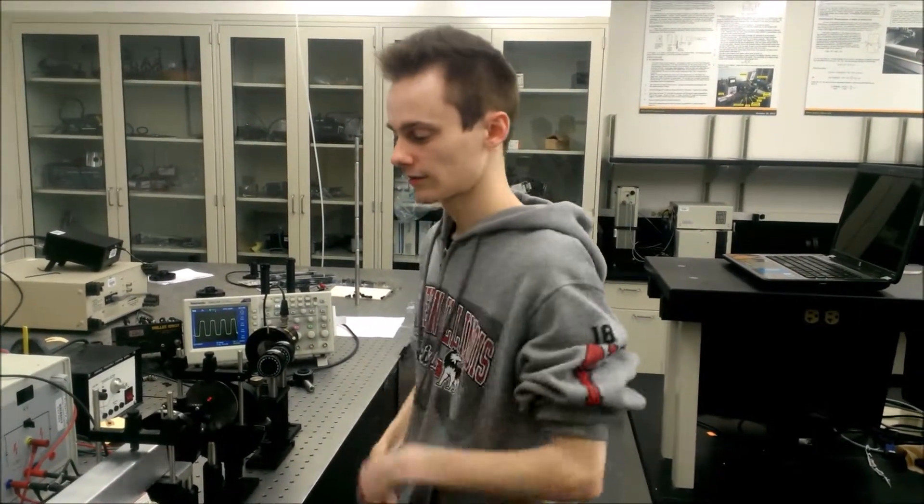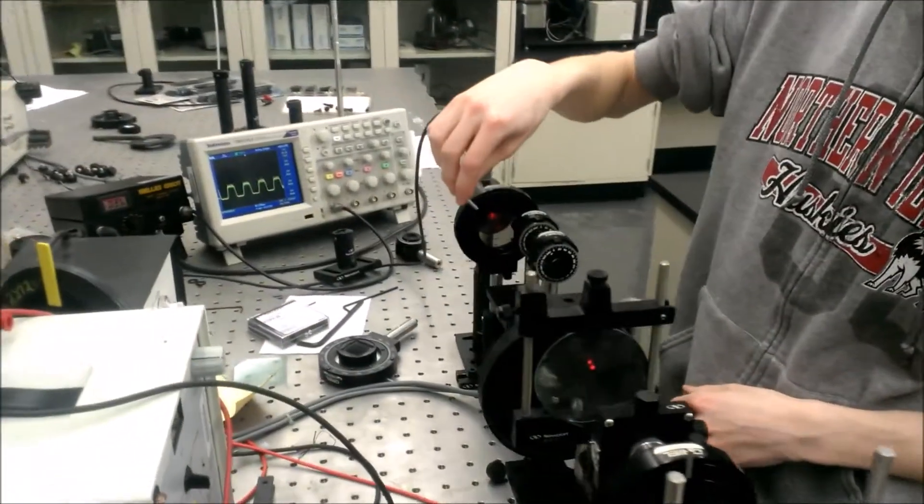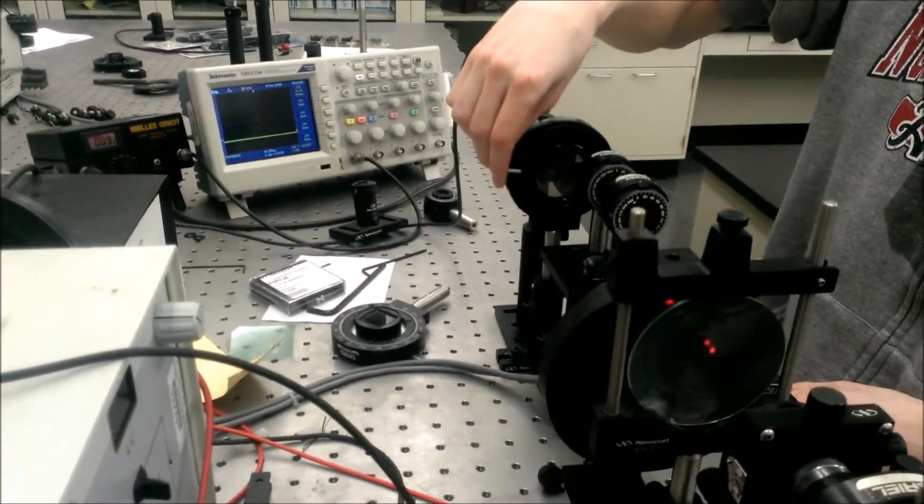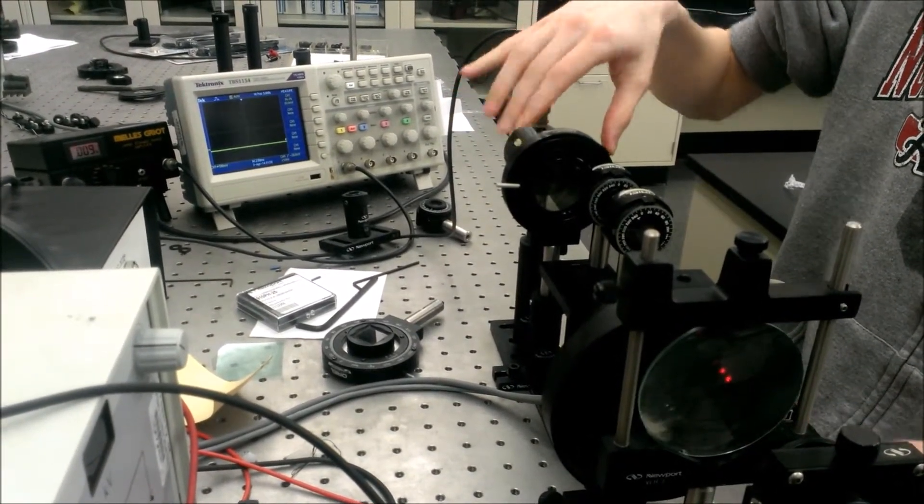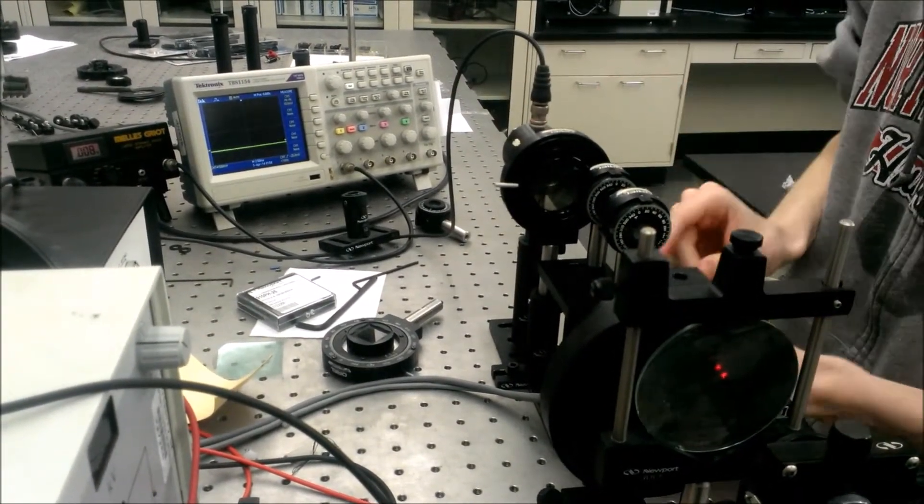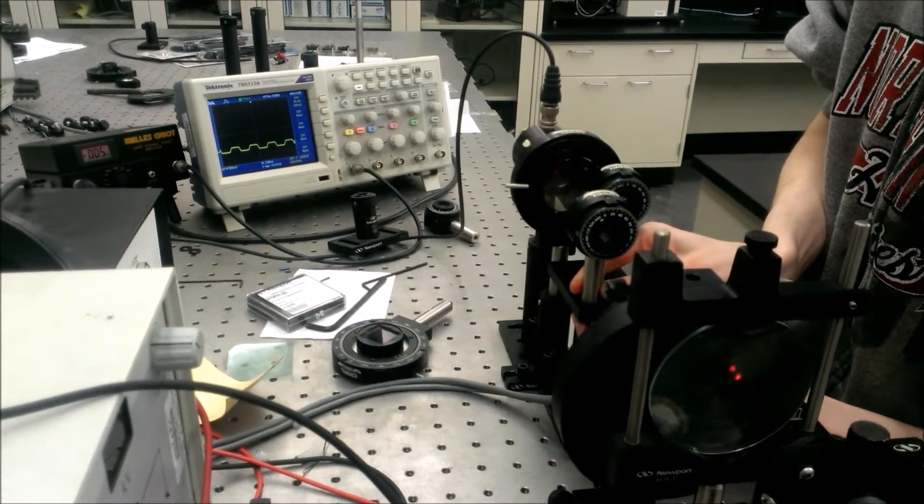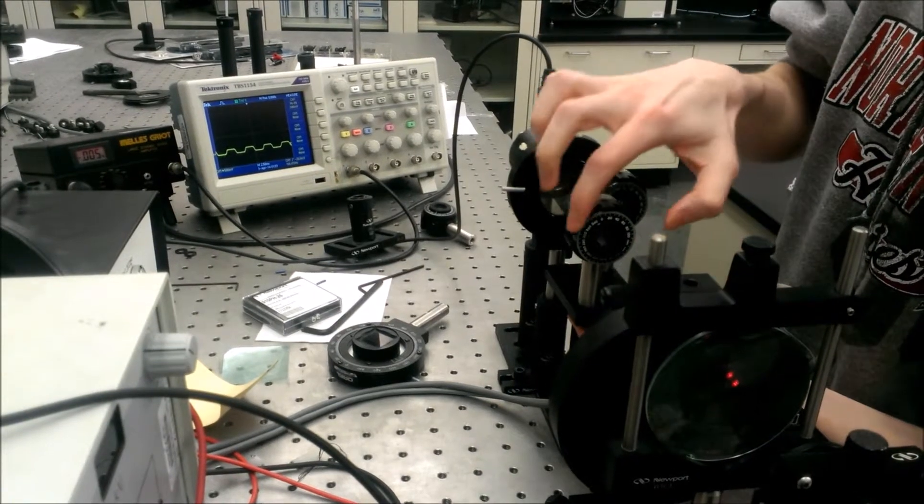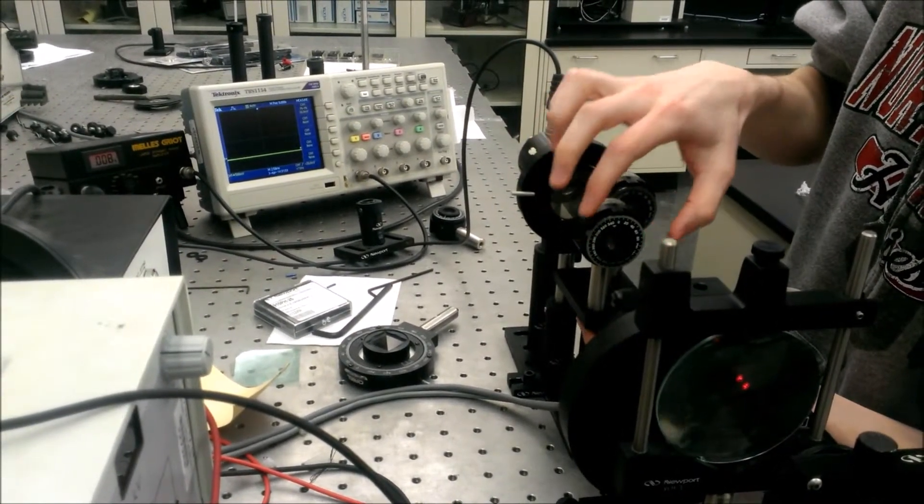For the last part of the experiment, we're going to be testing for elliptical polarization. As in the previous two cases, you're going to make sure that your initial source is extinguished, which is roughly 90 degrees between the laser and the polarizer. And then you're going to insert the quarter wave plate and set it so that it's vertical, and you can confirm that the light is extinguished.